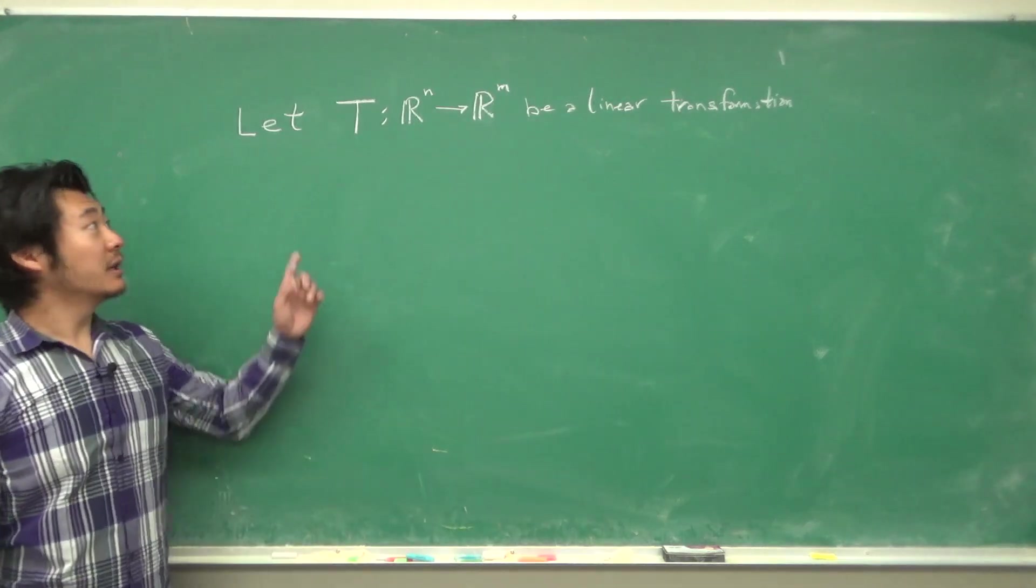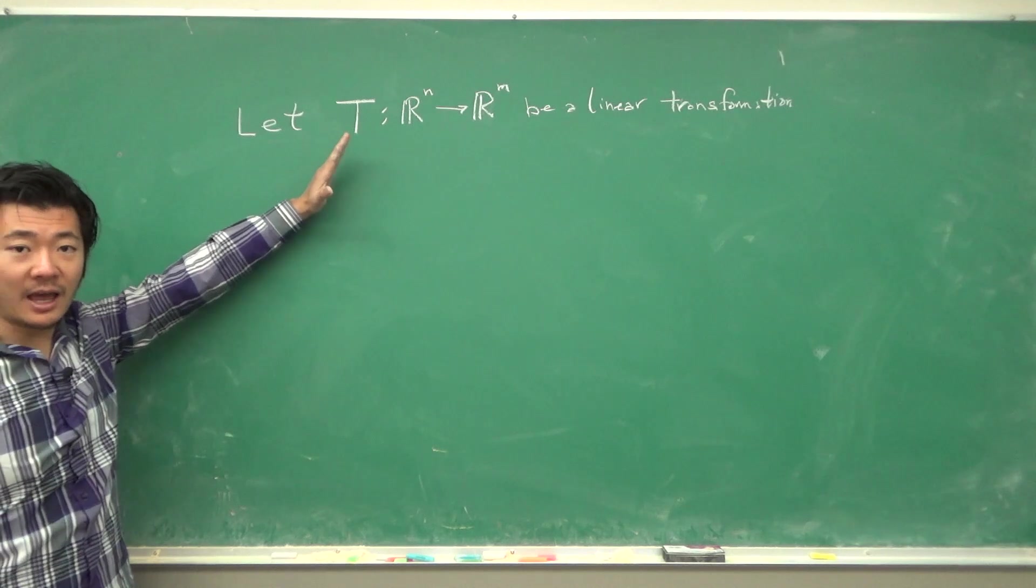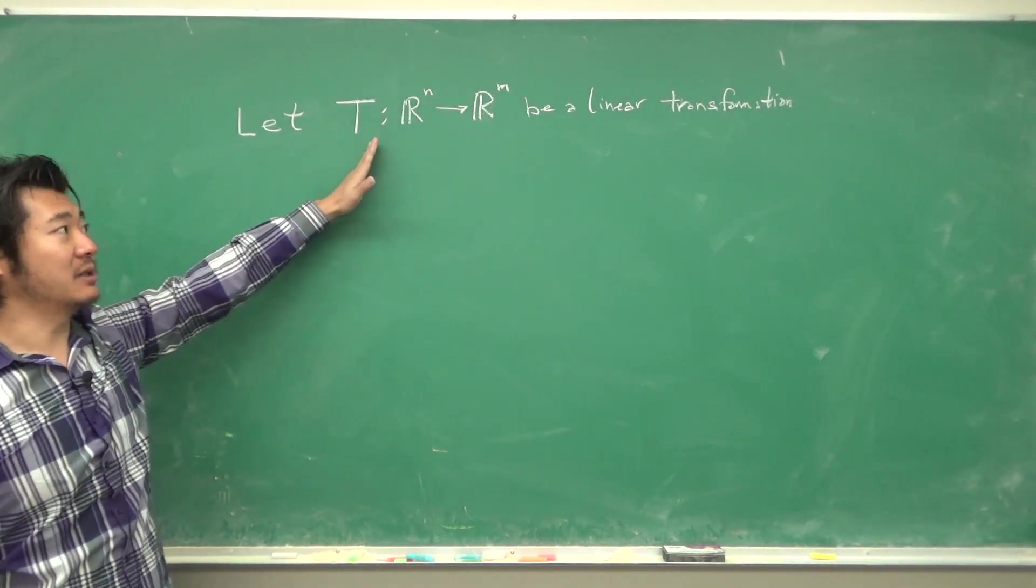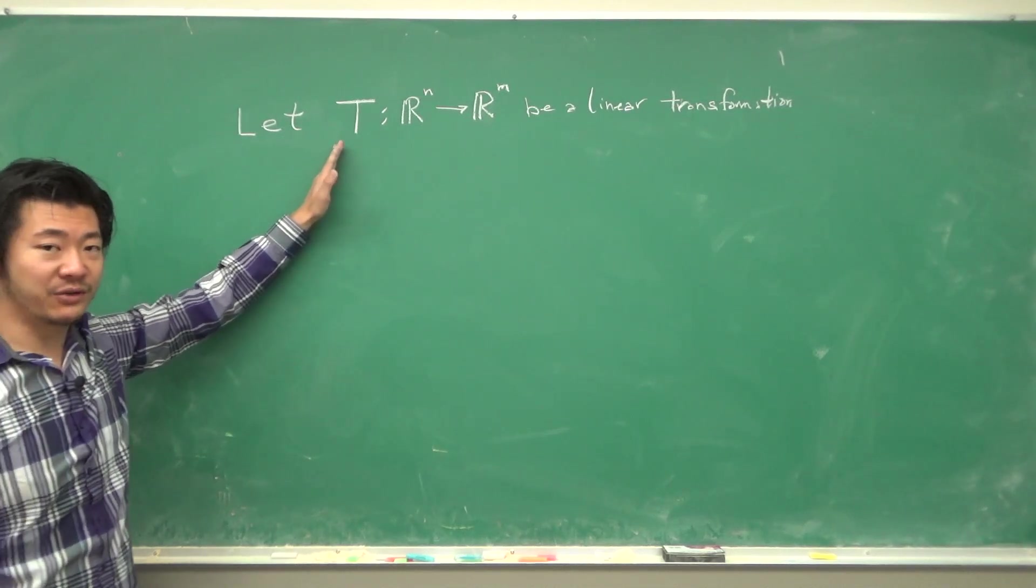Let T be a linear transformation from Rⁿ to Rᵐ. This is any linear transformation. We haven't explicitly defined what T is, but we just know that this is a linear transformation.